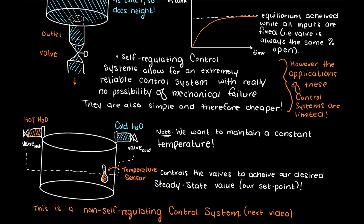So just remember, a self-regulating control system can only be so if the system can reach a steady state once all of the inputs are held constant.